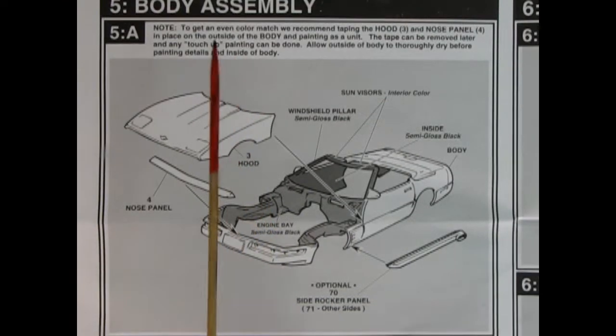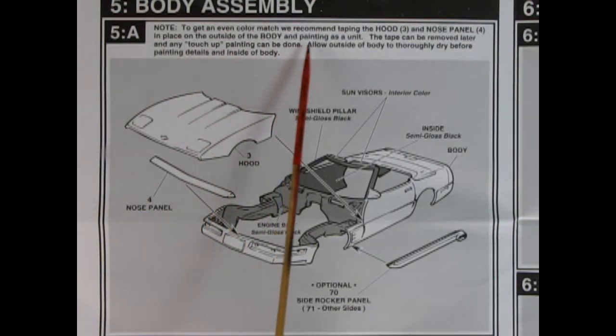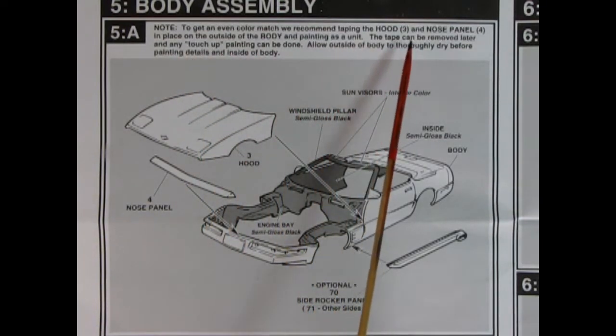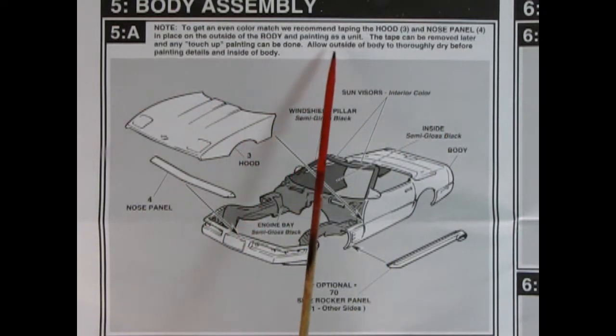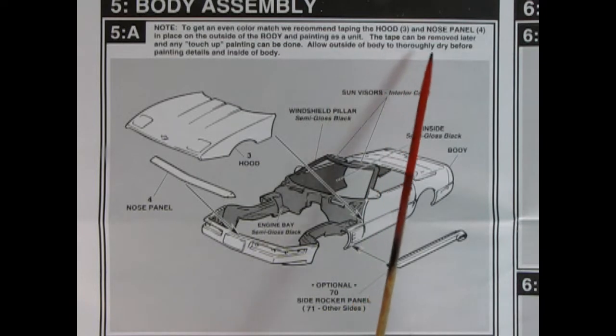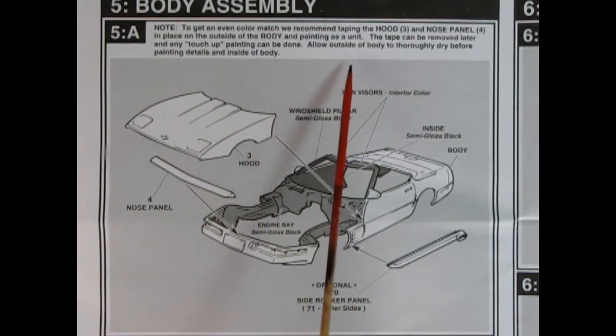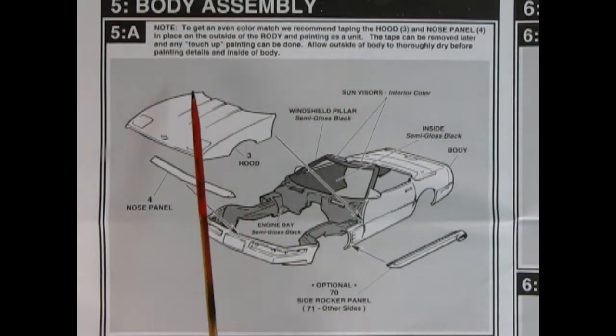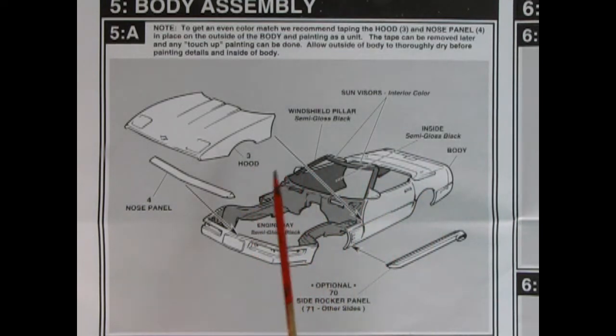In panel 5B we get our body assembly. And it says note to get an even color match. We recommend taping the hood and nose panel in place on the outside of the body and painting as a unit. The tape can be removed later and any touch up painting can be done. Allow outside of body to thoroughly dry before painting details and inside of body. That's a good idea. Nobody wants to grab wet paint, do they? I've done that once. A bad dog.